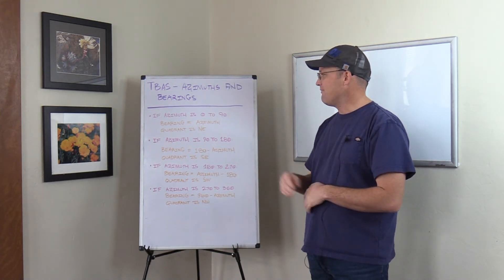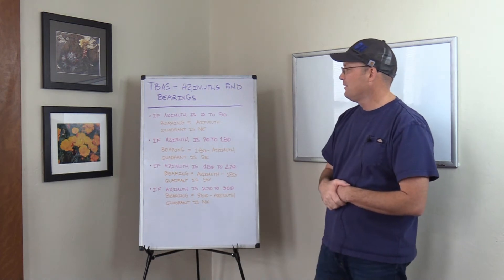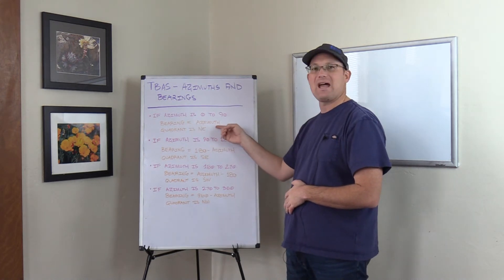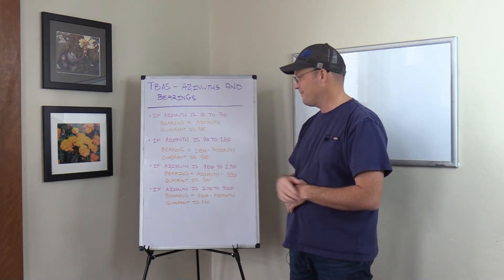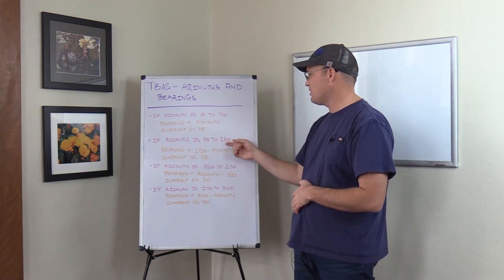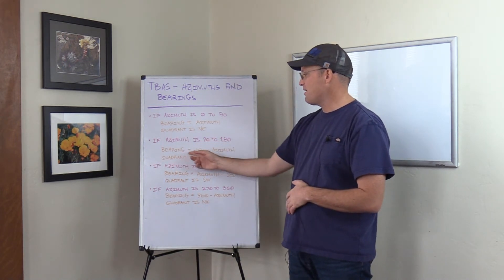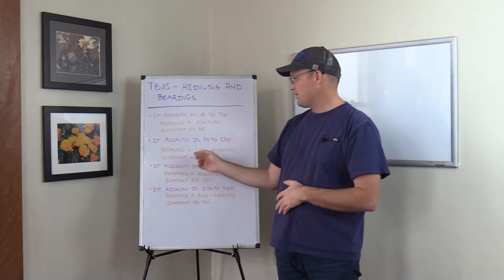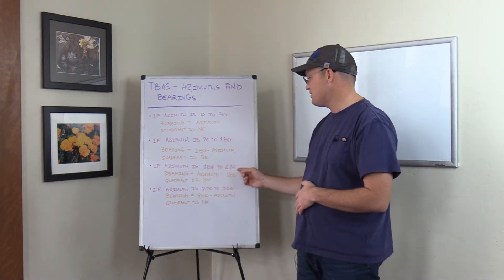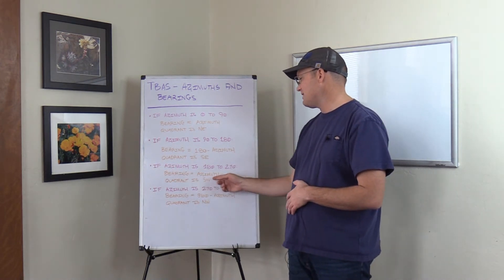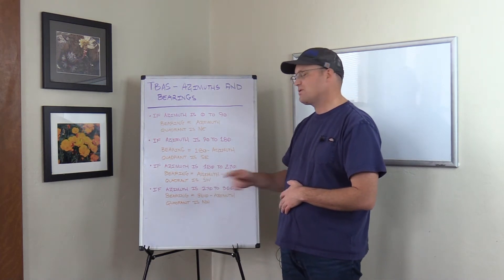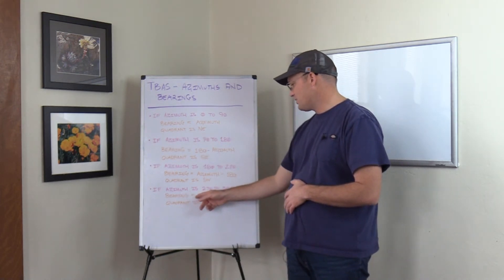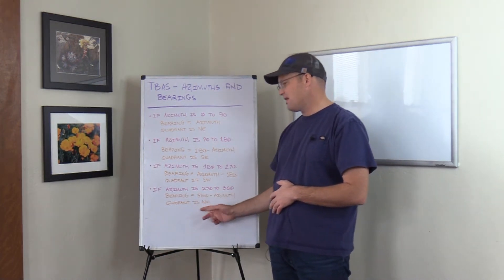Here are the four rules. Rule 1: if the azimuth is between 0 and 90 degrees, the bearing equals the azimuth, and the quadrant is northeast. Rule 2: if the azimuth is between 90 and 180 degrees, the bearing equals 180 degrees minus the azimuth, and the quadrant is southeast. Rule 3: if the azimuth is between 180 and 270 degrees, the bearing equals the azimuth minus 180, and the quadrant is southwest. Rule 4: if the azimuth is between 270 and 360 degrees, the bearing equals 360 minus the azimuth, and the quadrant is northwest.